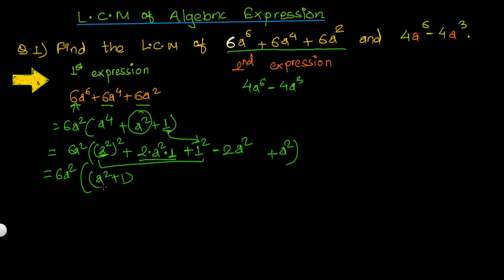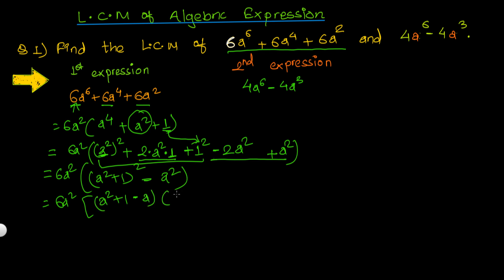This becomes (a² + 1)² − a² — recognizing the a² minus b² pattern — which factors as (a² + 1 + a)(a² + 1 − a). So the first expression fully factorizes as 6a²(a² + a + 1)(a² − a + 1). This is how you factorize this algebraic expression.